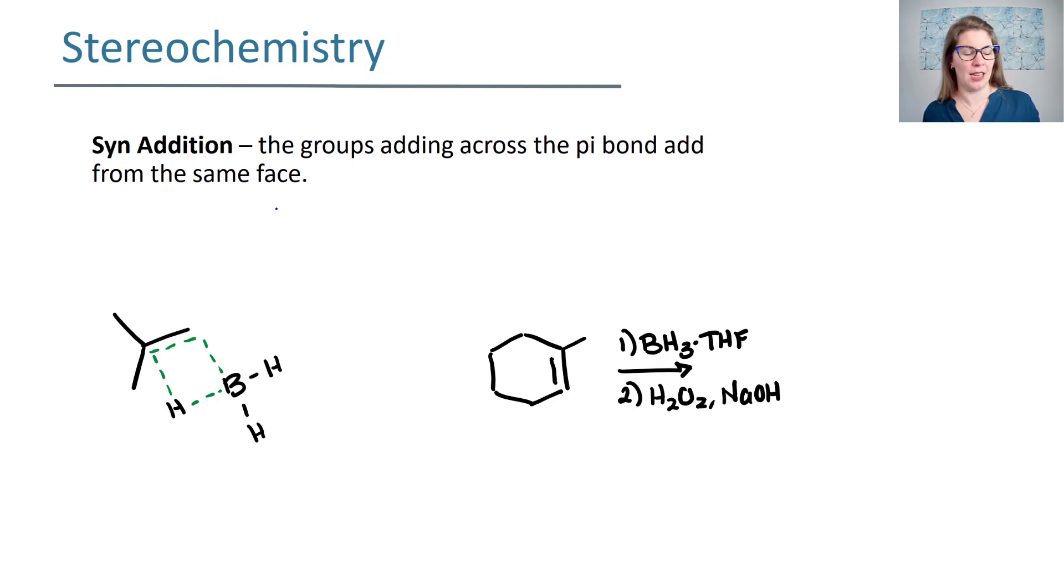What's happening is if your alkene is one of my hands and your BH2 is my other hand, they're interacting like this on the same plane. What that results in is something called syn addition. Syn addition means that your hydrogen and your BH2 are adding to the same face across that pi bond.